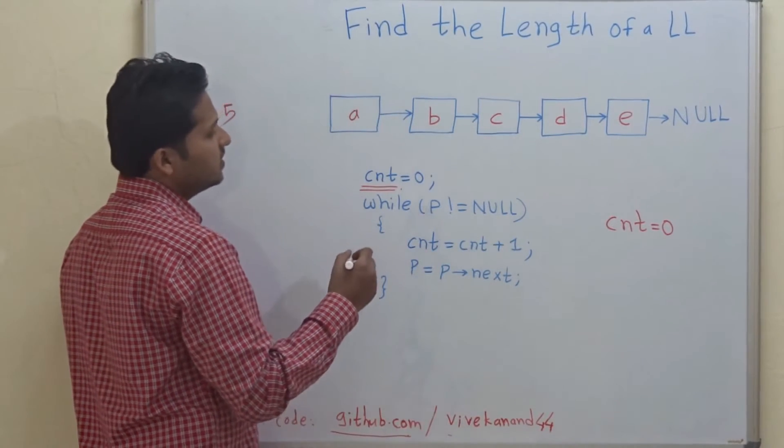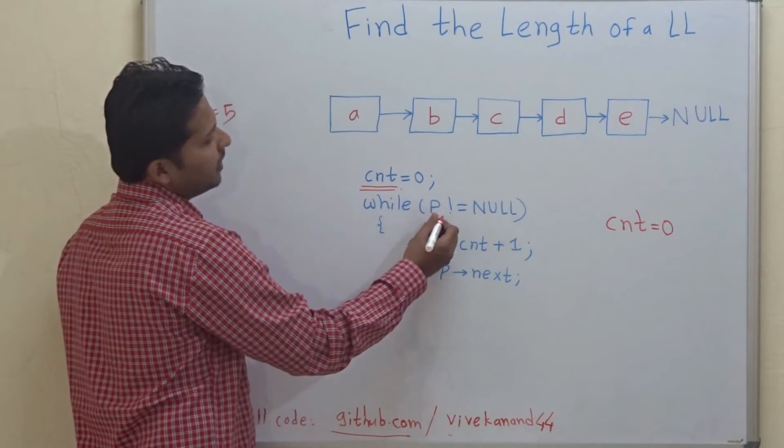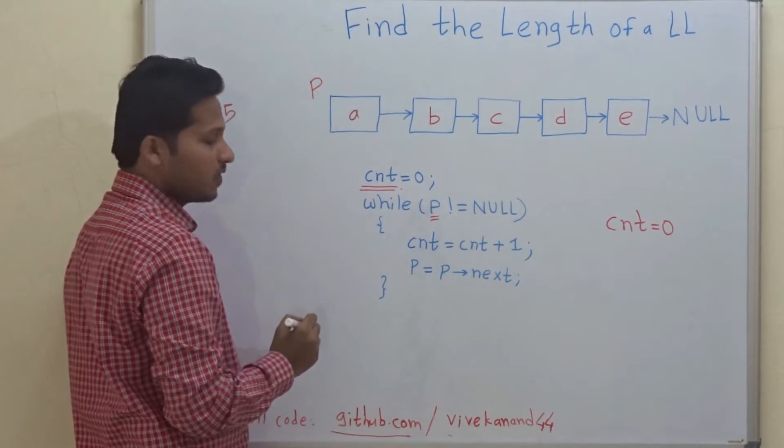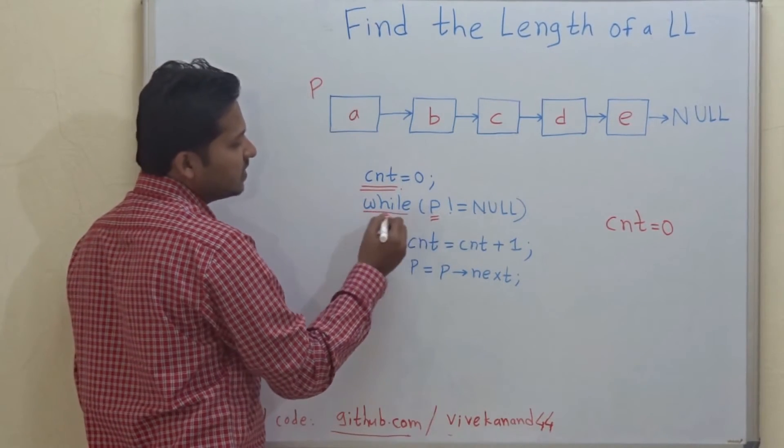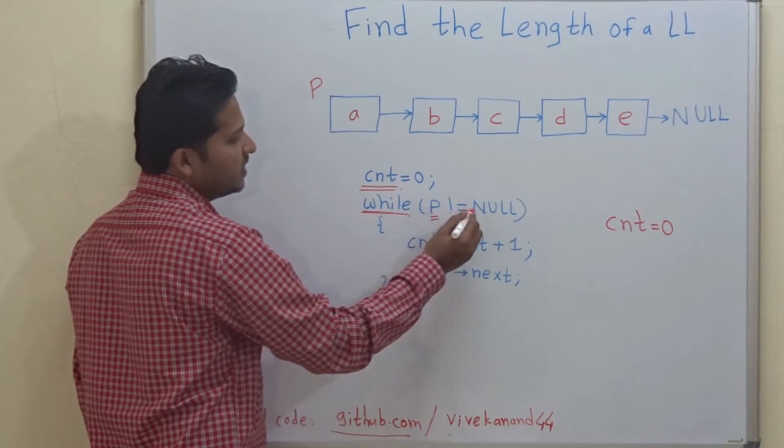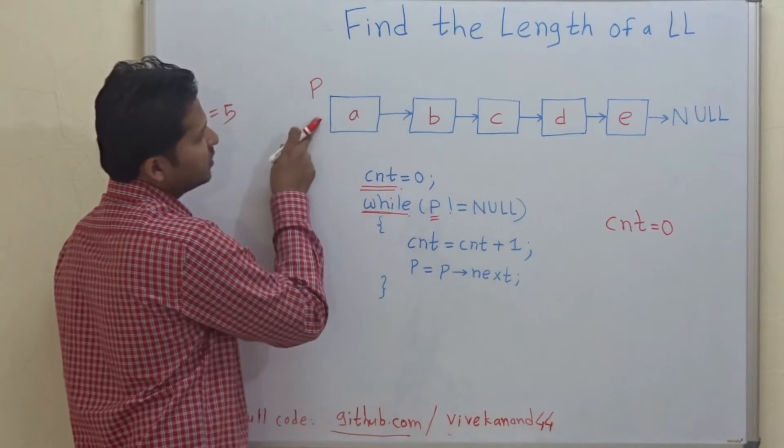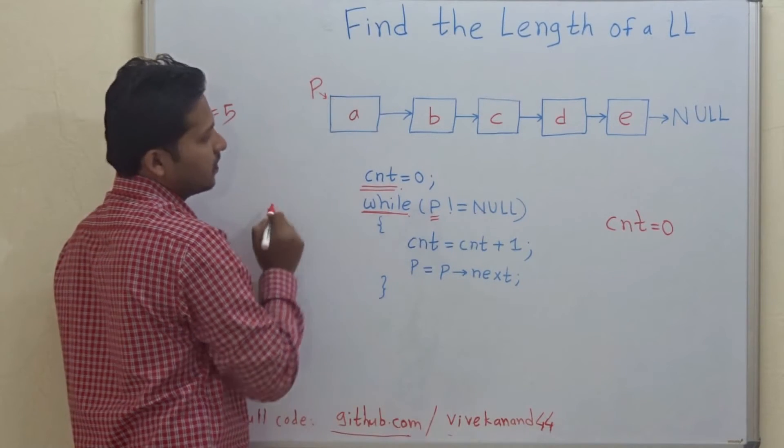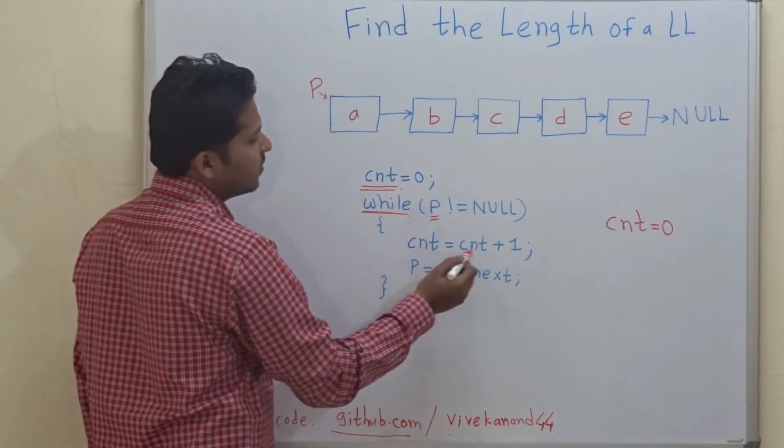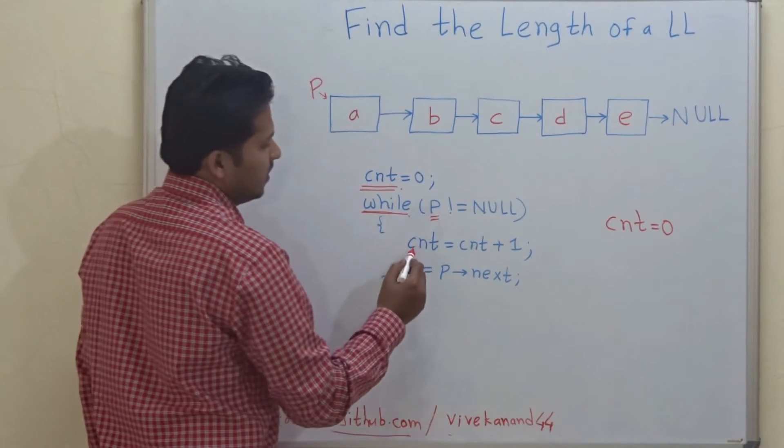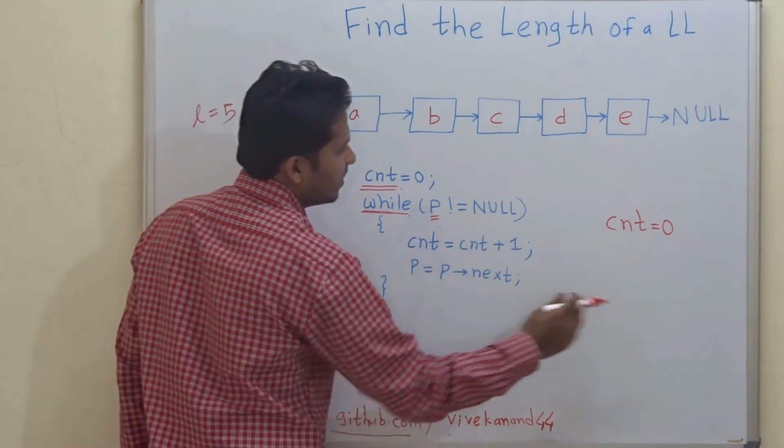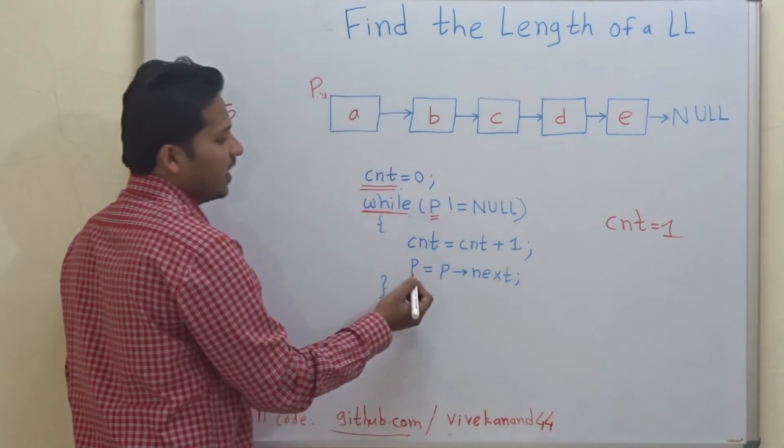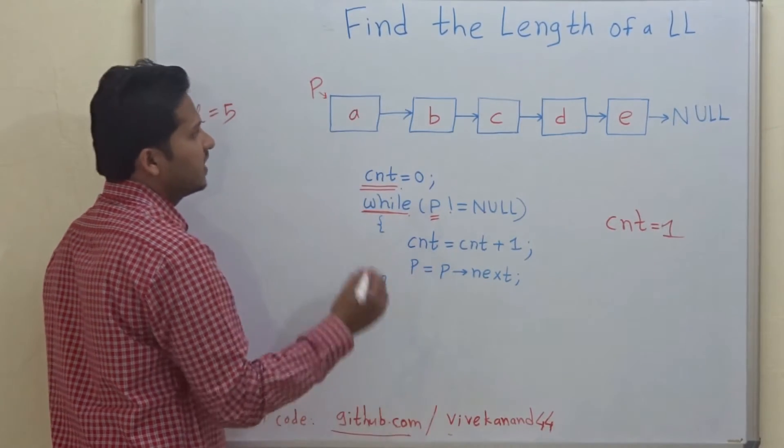Now we will traverse the linked list. p is a pointer which points to the head of the linked list at first. Now we will start with this while loop. While p is not equal to null—yes, p is not null at the beginning as it is pointing to a—counter is equal to counter plus one. So cnt equals cnt plus one. This zero will become one, and then p equals p.next.